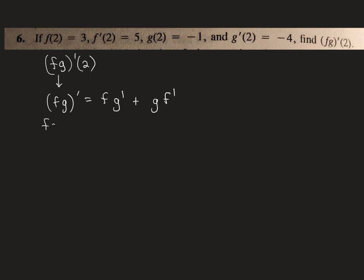And then what you do is just simply incorporate the at 2 part. So I basically run through and change everything. So f at 2, and then that's times g prime at 2, plus g at 2, times f prime at 2.